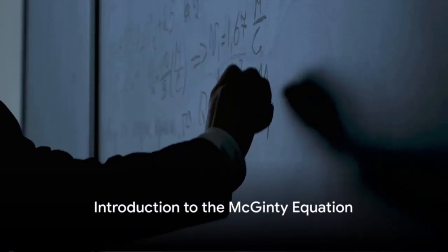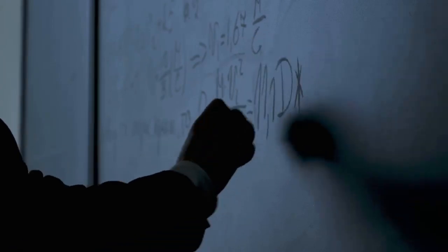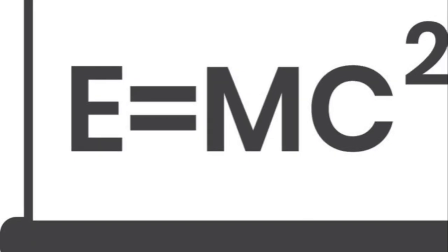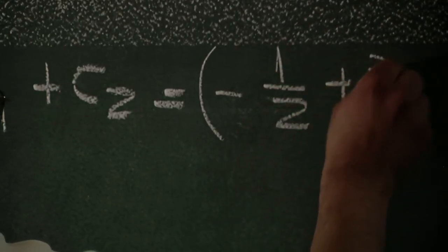Can you imagine a future where we could precisely design molecules to target and disrupt cancer cells? That future might not be as far off as you think. The key could lie in a complex equation known as the McGinty equation.